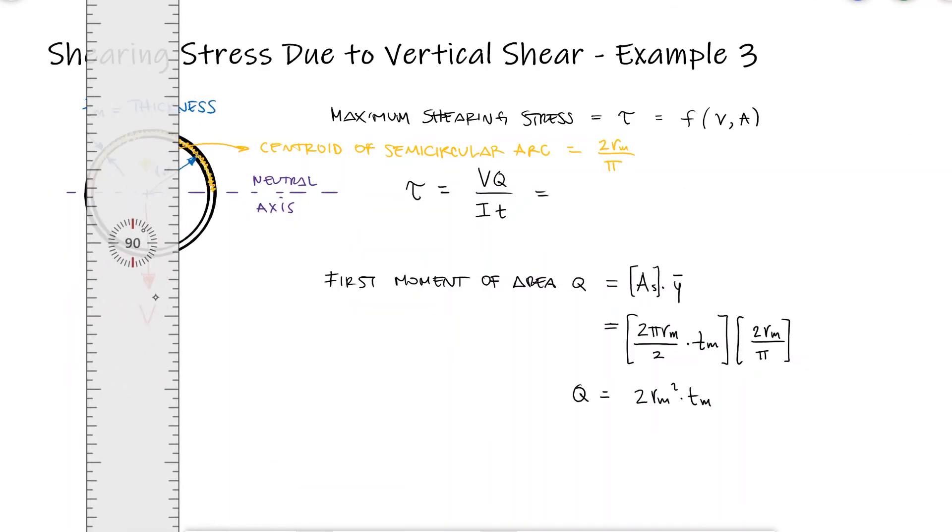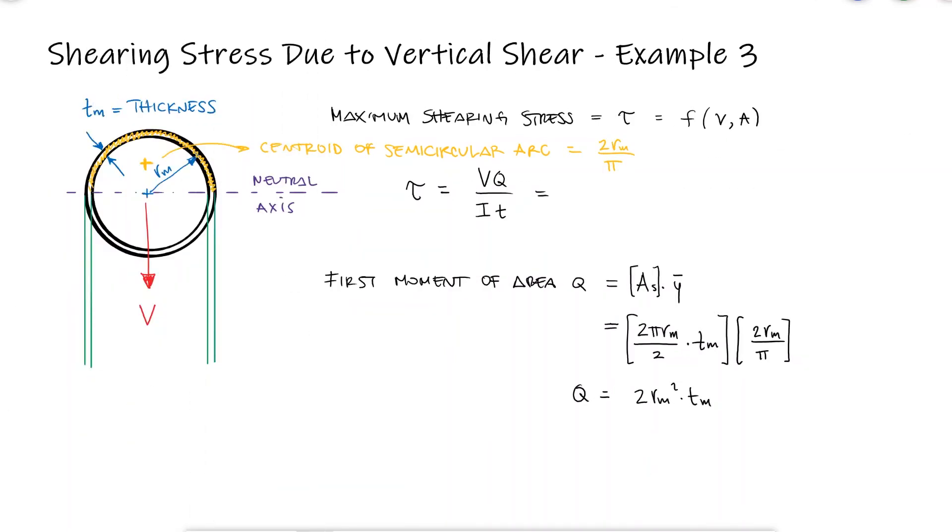The thickness t of the hollow rod at the neutral axis is 2tm, and even though we can use the expression for the second moment of area I for a hollow cylinder, a good approximation can also be found online for thin walled circular sections.